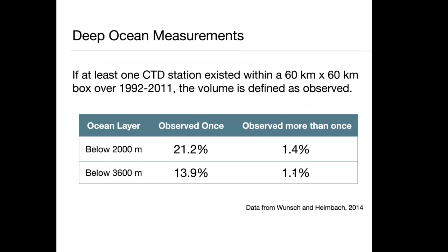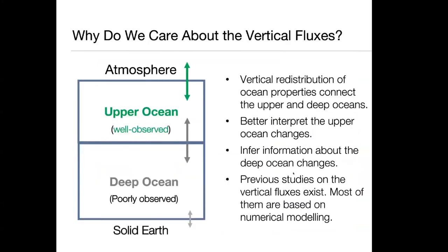The information we get about deep ocean changes based on such limited observation definitely has pretty big uncertainties, and that uncertainty is pretty difficult to quantify. This brings us to the reasons why we want to study the vertical fluxes. This diagram summarizes the relationship between the upper ocean and the deep ocean. We know the upper ocean is relatively well observed, so we have a better idea about what's going on there. But for the deep ocean, it's poorly observed, and there are huge uncertainties with existing studies about deep ocean changes.